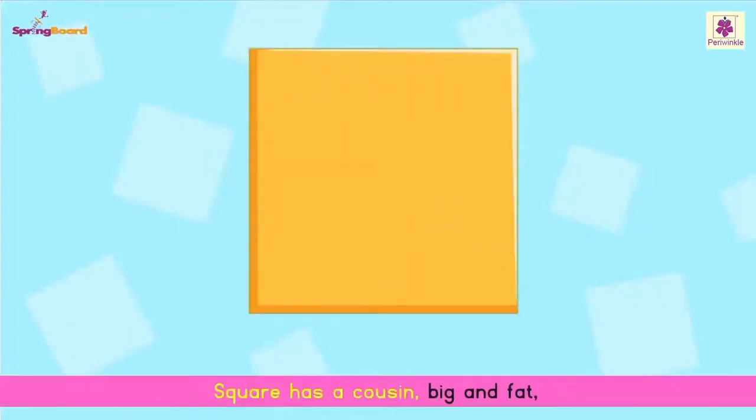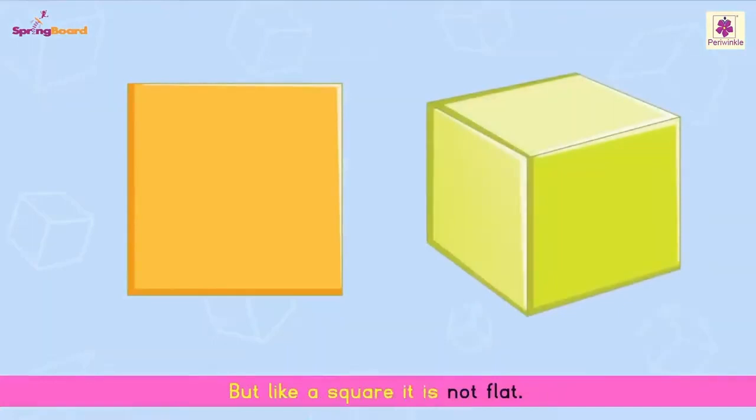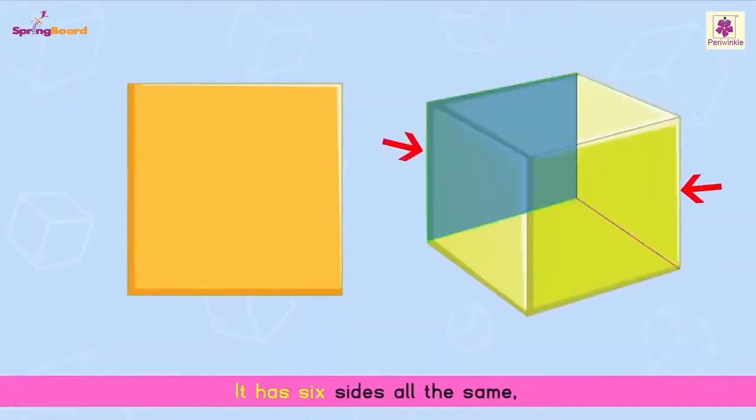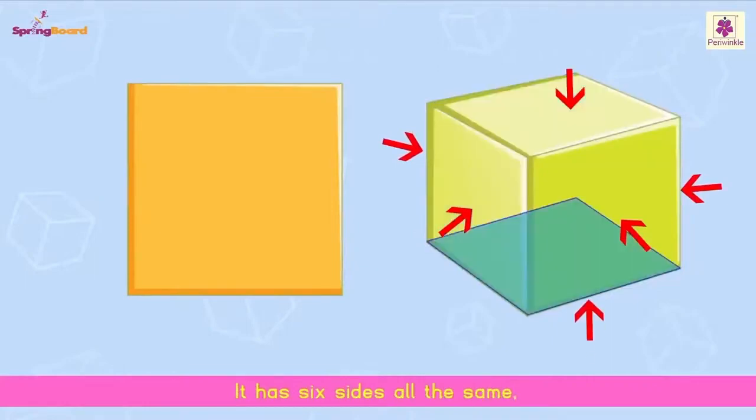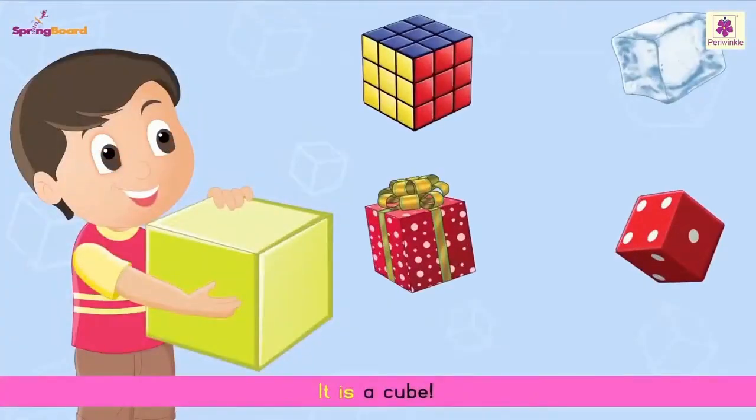Square has a cousin, big and fat. But like a square, it is not flat. It has six sides all the same. Can you guess what is its name? It is a cube.